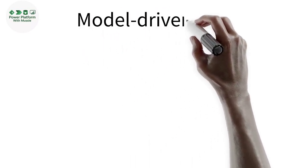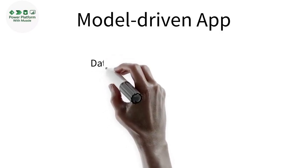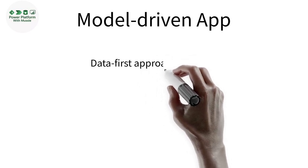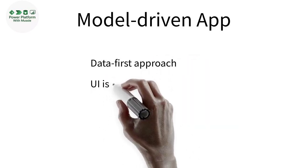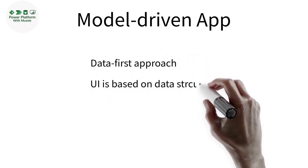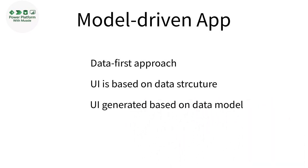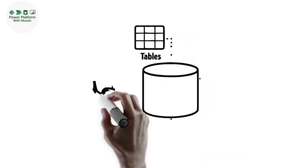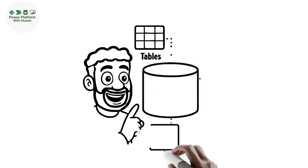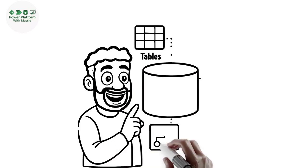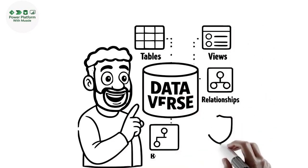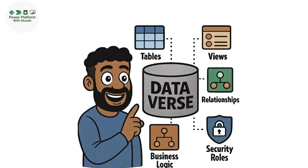Now let's talk about model-driven apps. These are data-first apps. Instead of designing the app layout yourself, Power Apps builds the UI based on your data structure — like tables, relationships, forms, views, and Dataverse. Because model-driven apps use components inside Dataverse, like tables, forms, views, business logic, security roles, and access control, they are Dataverse dependent.